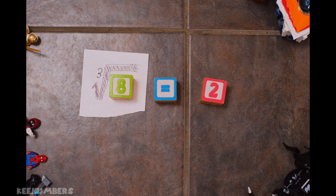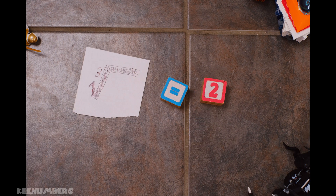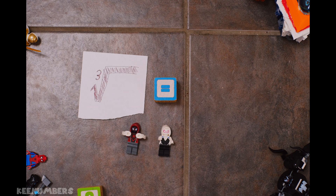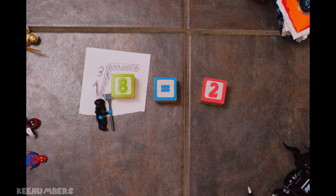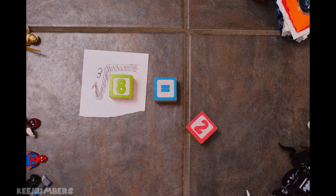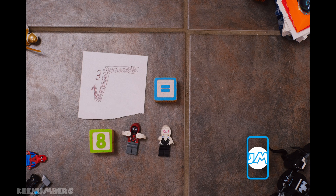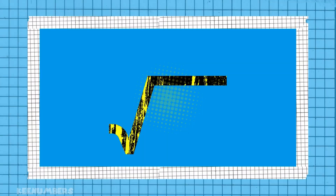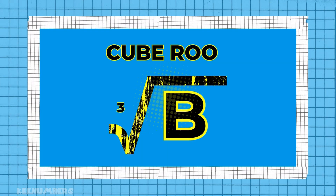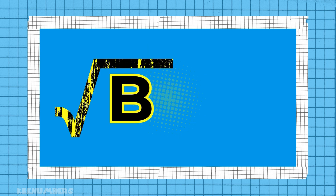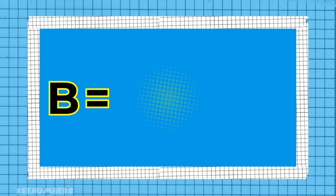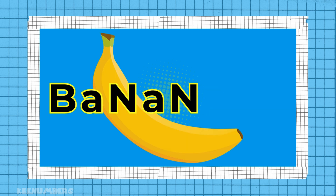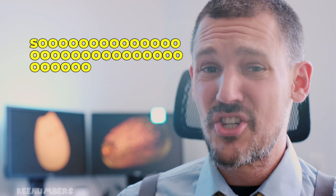The cube root of 8 is equal to 2 because 2 times 2 times 2 is equal to 8. The cube root of a number B is a number — let's call it N — such that N times N times N is equal to B.